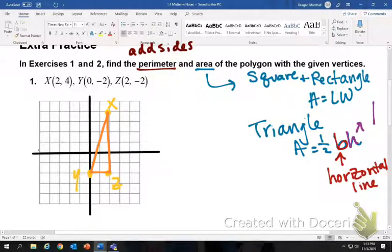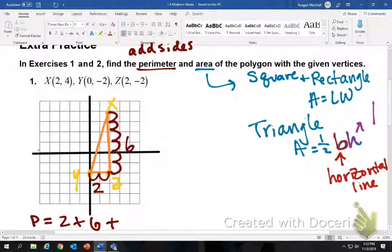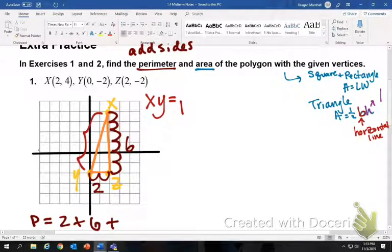We're going to go ahead and find the perimeter first. Perimeter you're going to add all the sides. So we'll start with easy ones, this bottom, this side, the length is 2. The vertical line, which is this one right here, count the boxes, 1, 2, 3, 4, 5, 6. And then the last one you can't count, because it is a slanted line. You're actually going to have to find the distance. We're going to find the distance between x and y, and that will tell us the length. So we're going to use our formula.